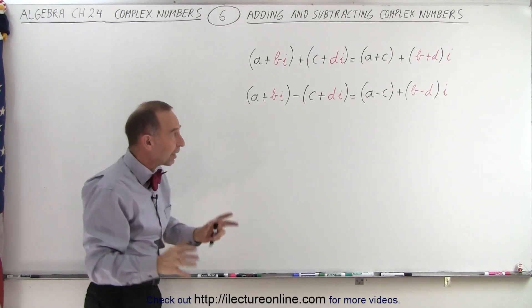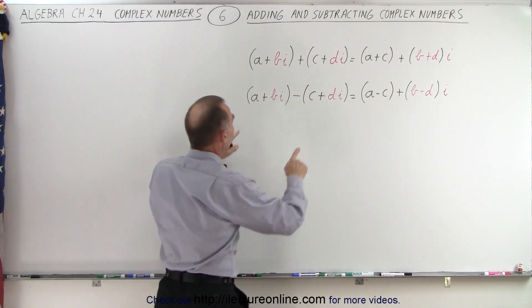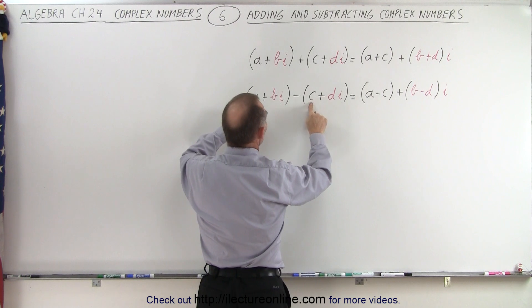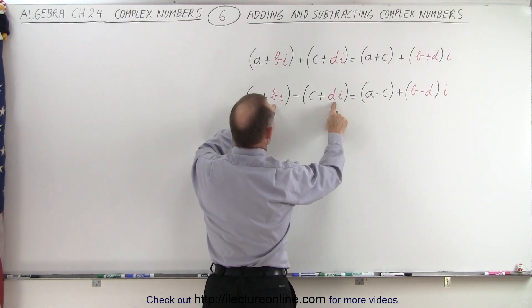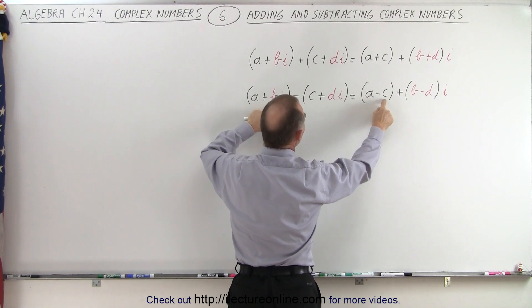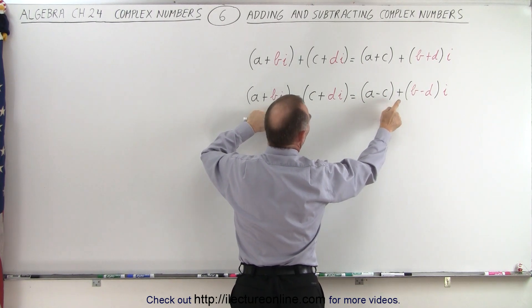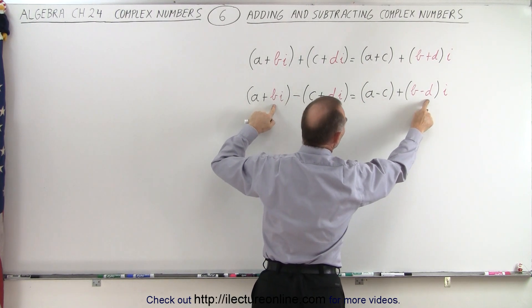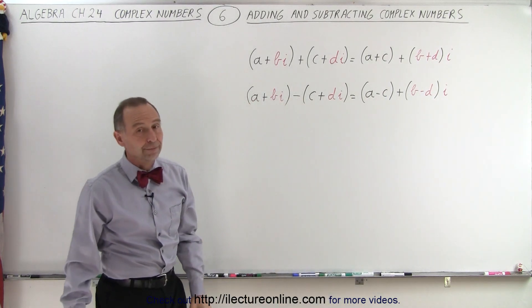In the case of subtracting two complex numbers, notice we're going to subtract the real parts from one another and we're going to subtract the imaginary part. So this becomes A minus C as the real part of the answer plus B minus D as the imaginary part of the answer.